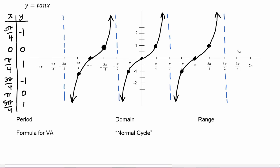Over at the edges, we don't have room for a full cycle. On the right side, we know the tangent of seven pi over four is negative one and the tangent of two pi is zero, so we get that portion of the graph. On the left side, the tangent of negative two pi is zero and the tangent of negative seven pi over four is equal to one, and we can draw that piece.